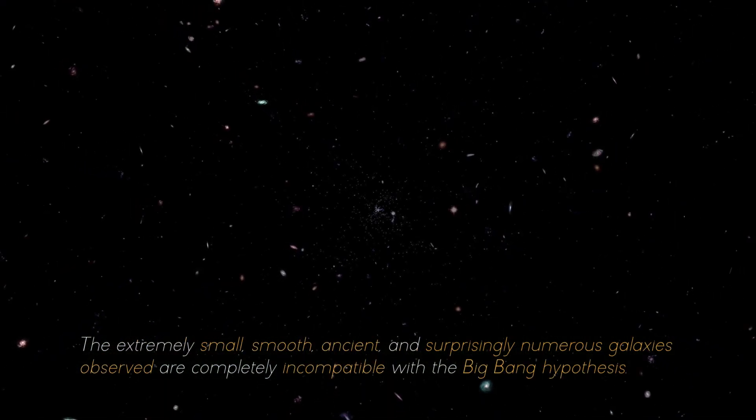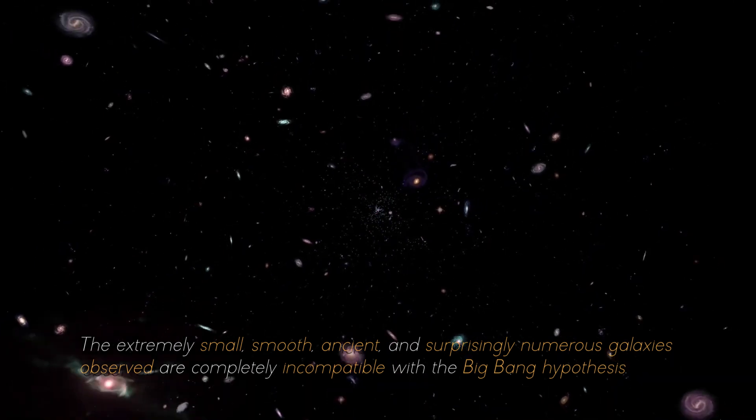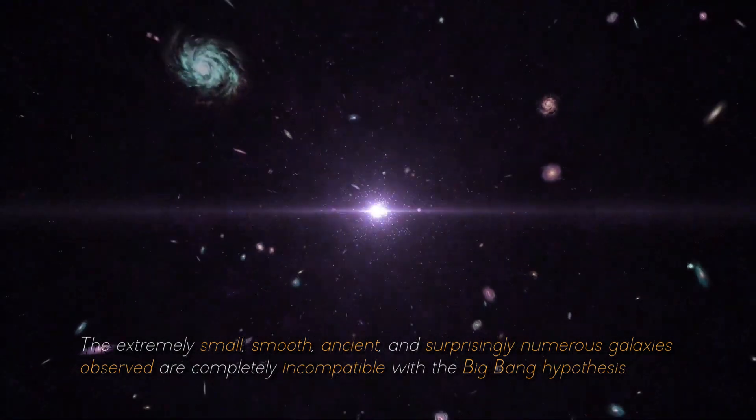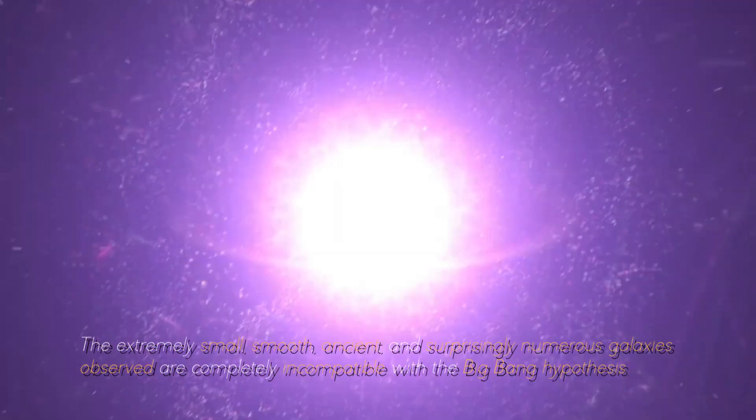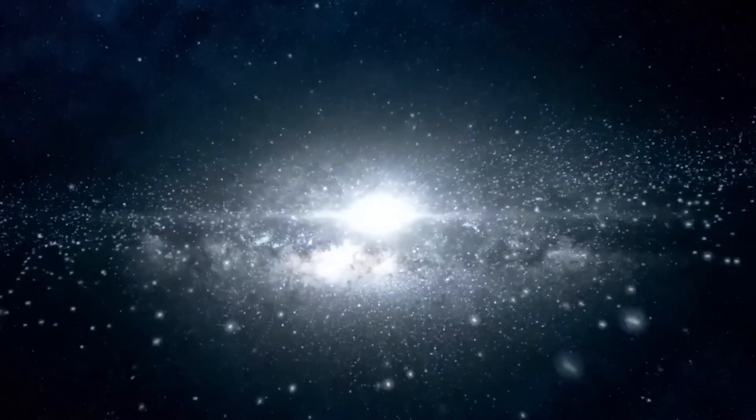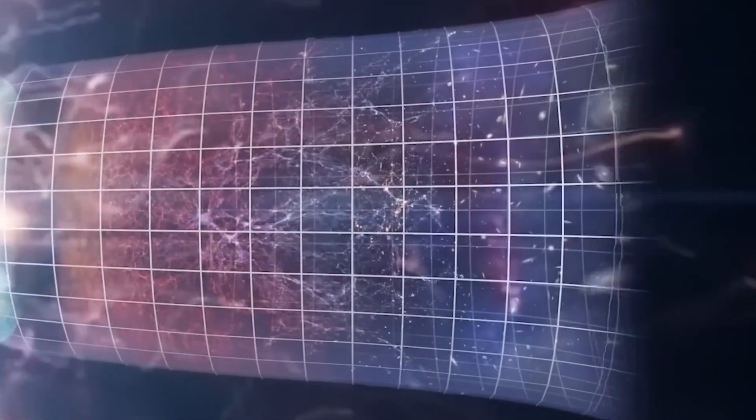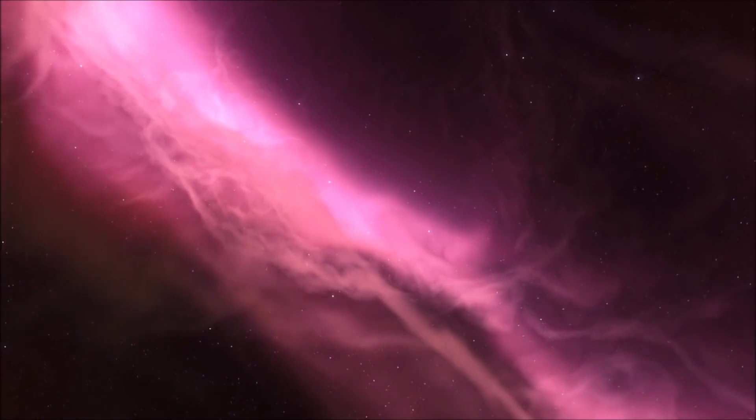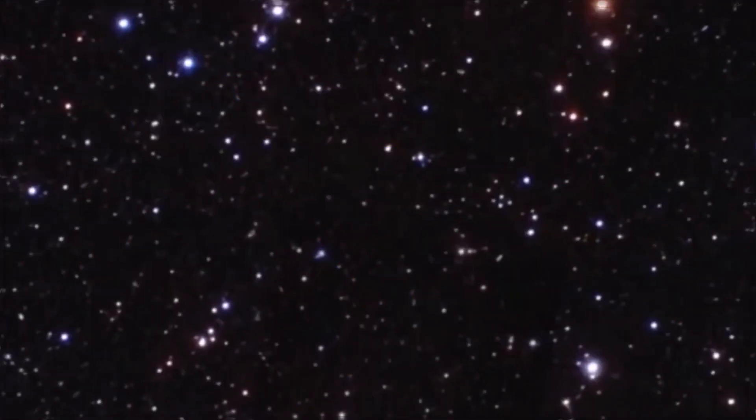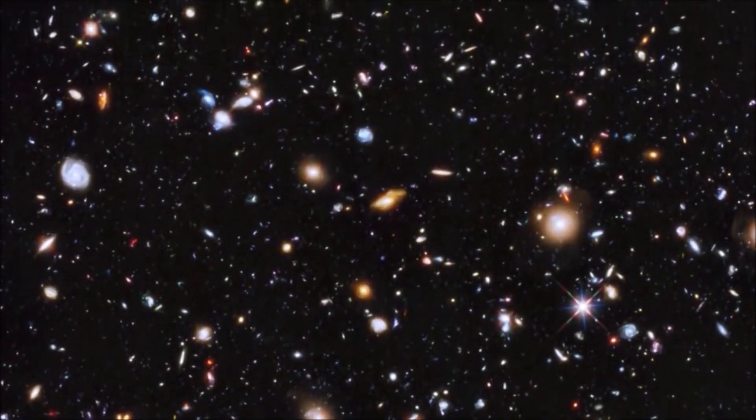The extremely small, smooth, ancient, and surprisingly numerous galaxies observed are completely incompatible with the Big Bang hypothesis. In the view of some scientists, the Big Bang proposes that the universe is expanding and that galaxies and other objects in expanding space should appear larger with increasing distance. However, images from the James Webb Telescope show us more and more smaller galaxies, even those with a luminosity and mass much greater than that of the Milky Way, suggesting that the universe is not expanding and that the redshift is proportional to the distance of galaxies.